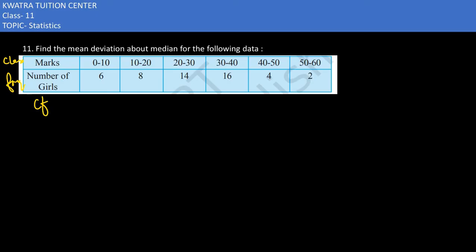Next table, we have the cumulative frequency. We have 6, 6 plus 8 is 14, 14 plus 14 would be 28, then 28 plus 16 would give me 44, 44 plus 4 would be 48, and 48 plus 2 would be 50. So this means total frequency is 50.